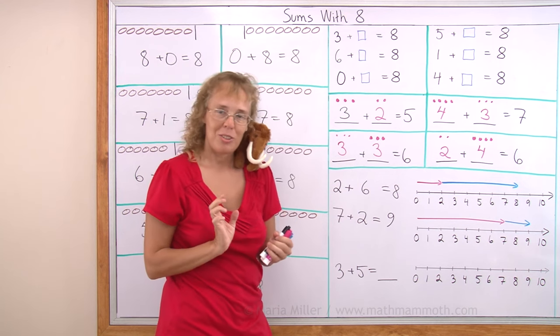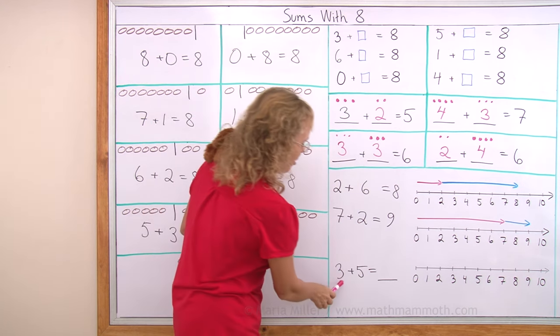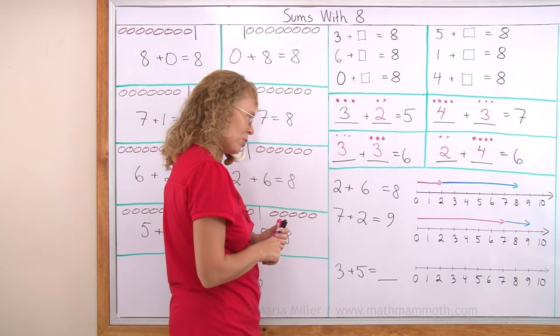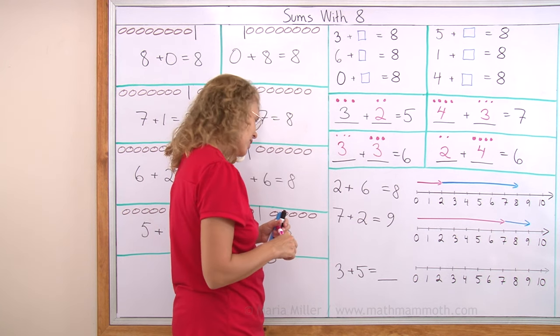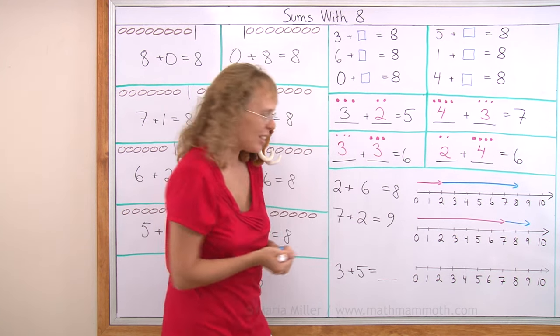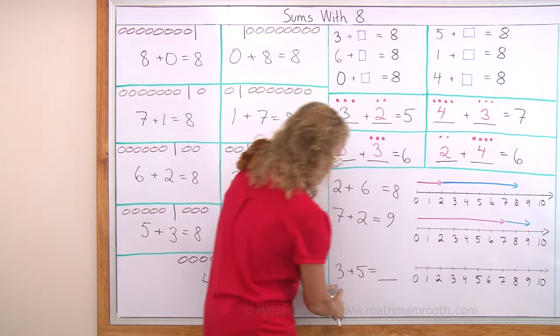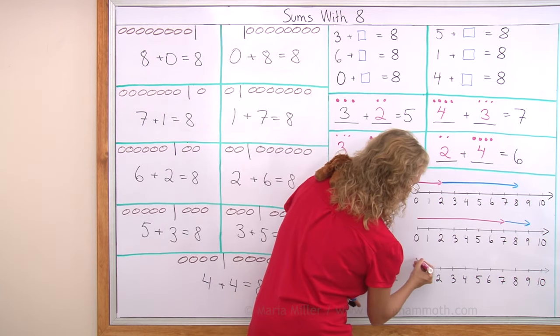Lastly, we need to draw the arrows. For 3 plus 5 equals how much? Would you like to draw Mathie? No, not at this time. He's letting me draw. Okay. 3. My first arrow is 3 units long from 0 to 3.